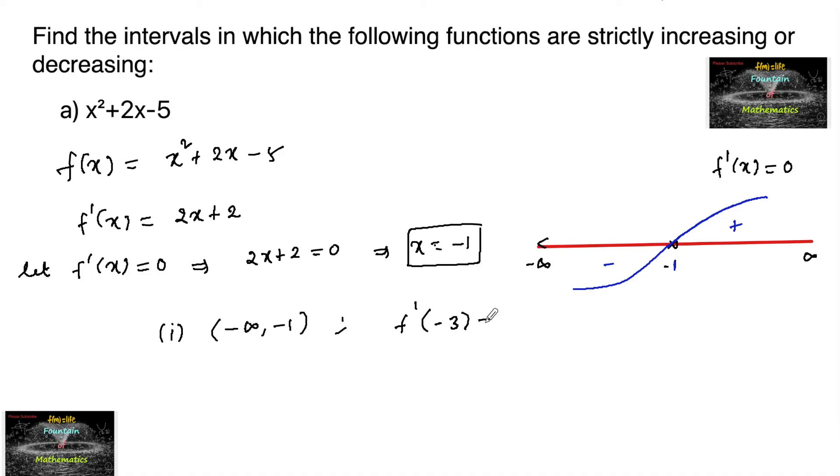f'(negative 3) equals 2 times negative 3 plus 2, that's negative 6 plus 2, which is minus 4, which is negative. So we can say that in this interval, the function is decreasing.